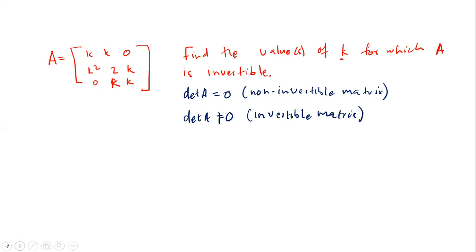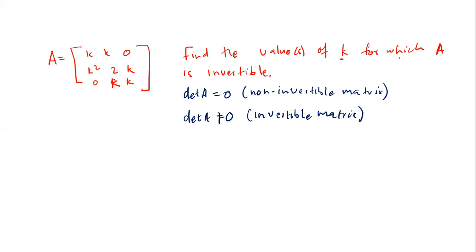Based on this, we can determine the values of k for which matrix A is invertible. We are going to determine the determinant of matrix A first. You can use any method; however, I prefer using cofactor row expansion. I'll focus on the first row entry k.